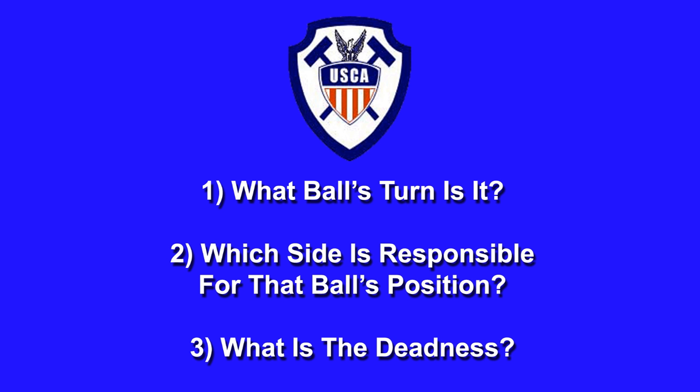This ball is sometimes known as the asking ball. The second question is: what side is responsible for the asking ball's position? The opponents have to be responsible for the asking ball's position. Finally, what is the deadness? The asking ball must have a shot on at least one ball it's alive on.